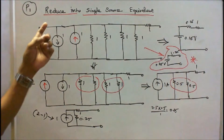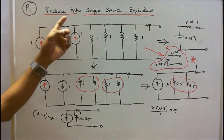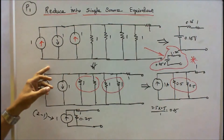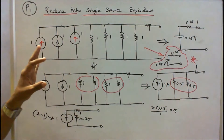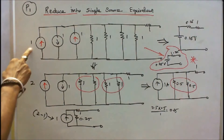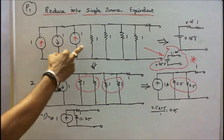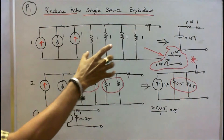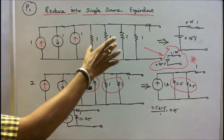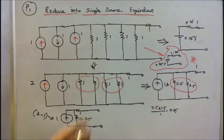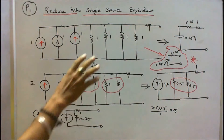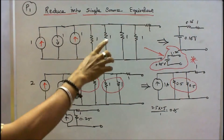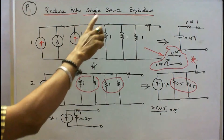Problem number 1. Reduce into single source equivalent. In this network there are 3 current sources: this is 1 amp, this is 1 amp, this is 1 amp. And 5 resistors are connected — 4 resistors are connected in parallel, one is connected in series. All the resistors are in ohms. We have to find what is its single source equivalent.